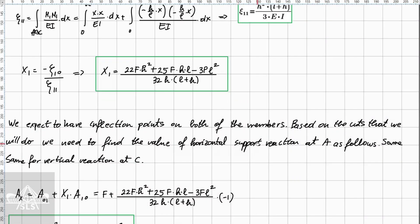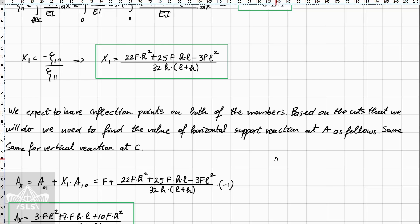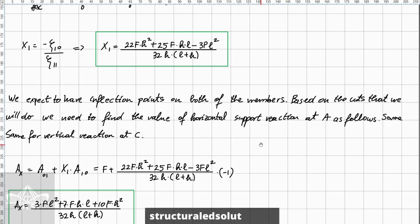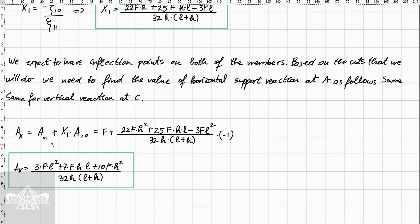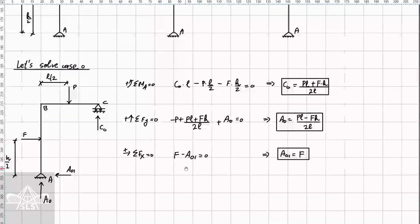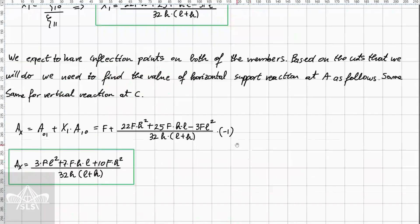As mentioned, we expect inflection points on both members. Based on cuts taken, the horizontal support reaction at A is found, and similarly the vertical reaction at C. One must be careful to use the values corresponding to each case: A₀₁ comes from case zero, and the same applies for the other support reactions.